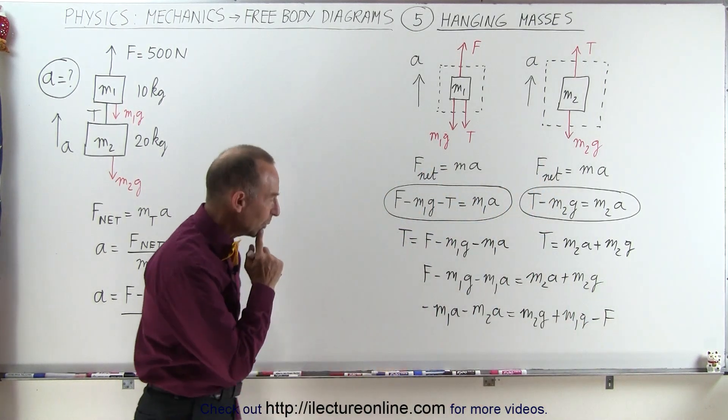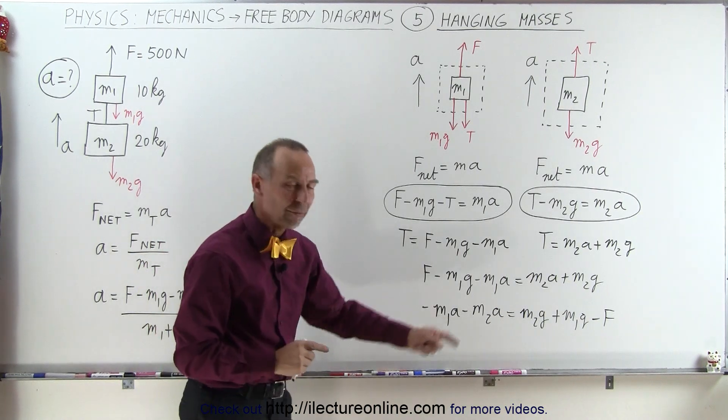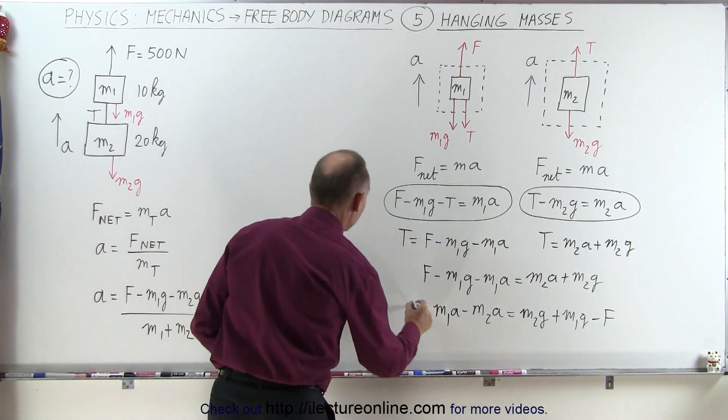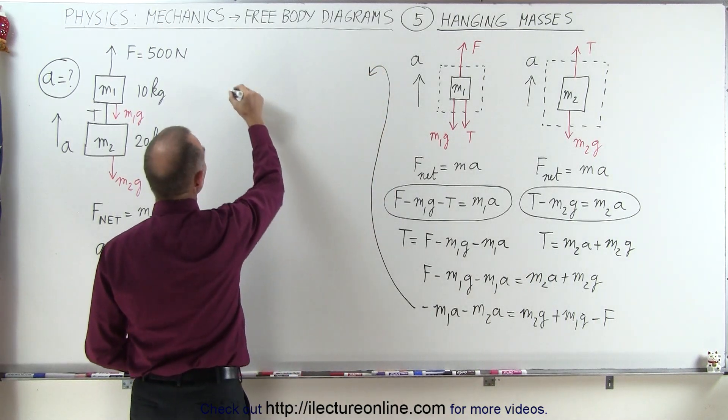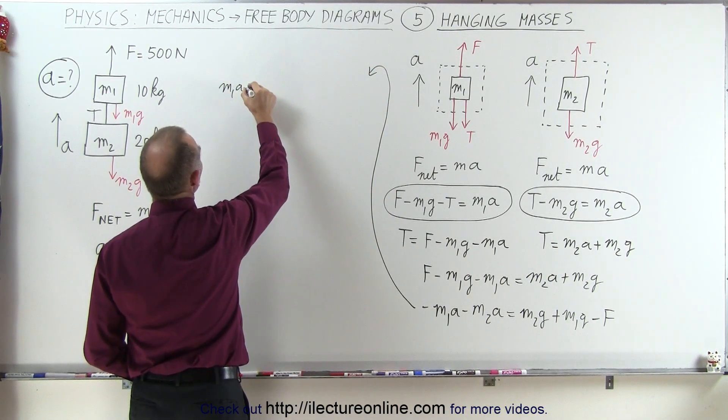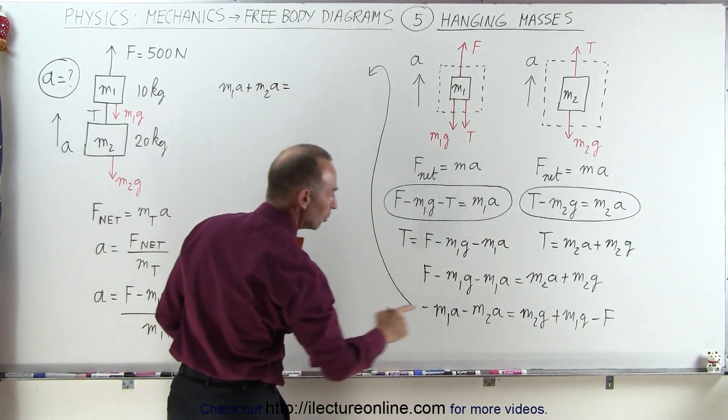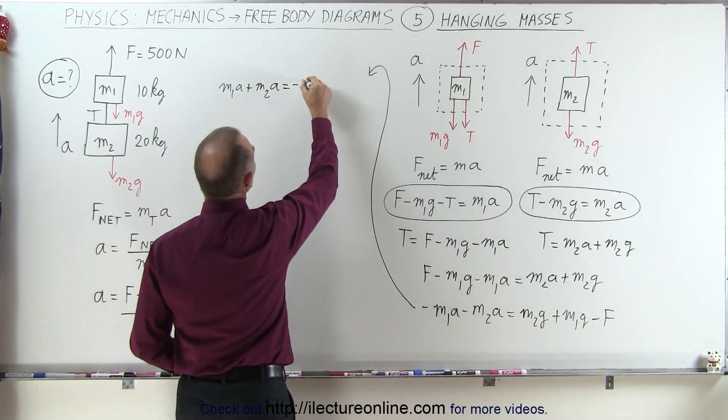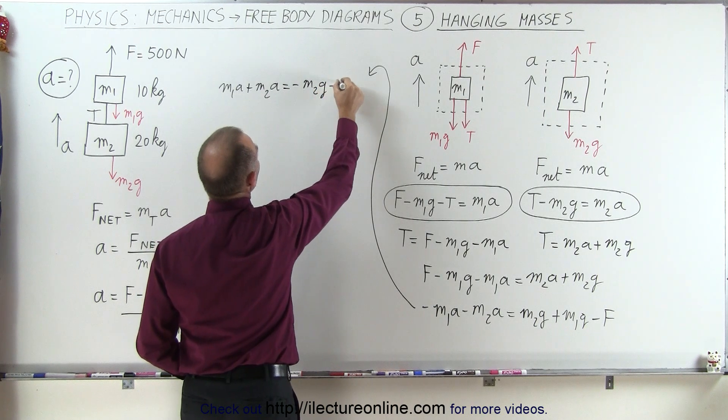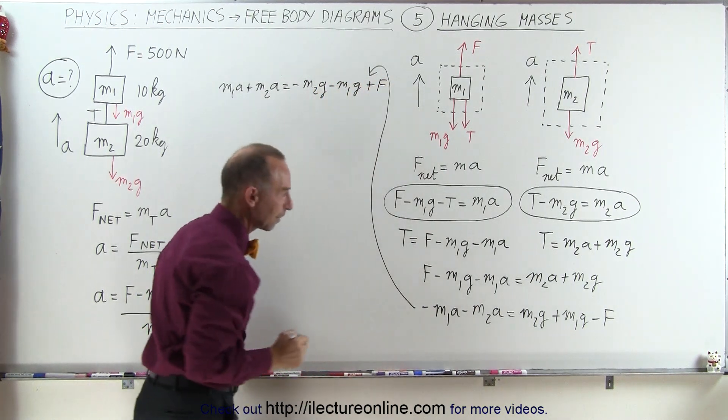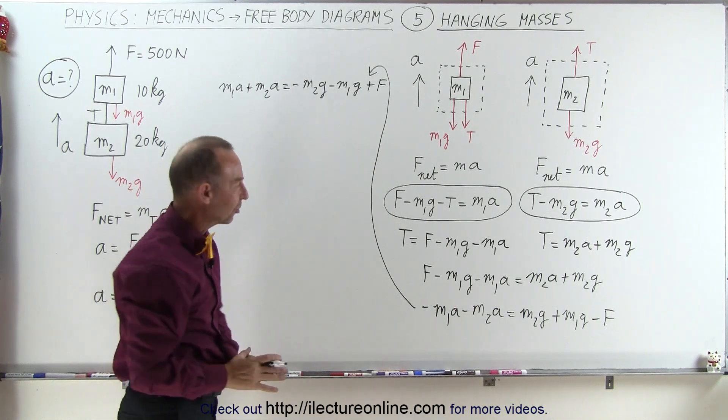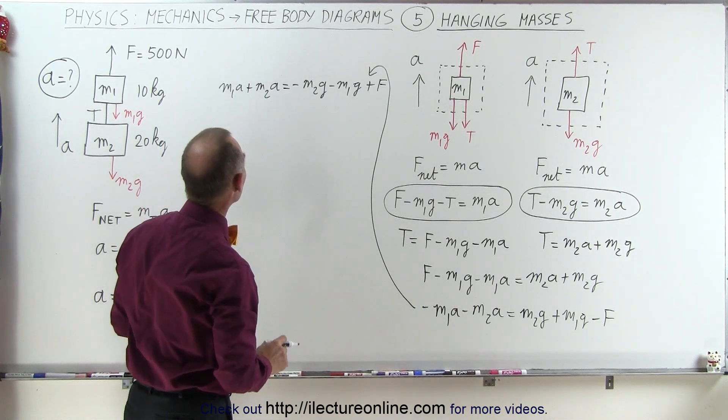We want to have positive everywhere, so we're going to change all the signs. So now we come up here, and so we have m1 a plus m2 a is equal to, we have minus m2 g minus m1 g plus f. So we just simply change all the signs, so we have a positive a on the left side.